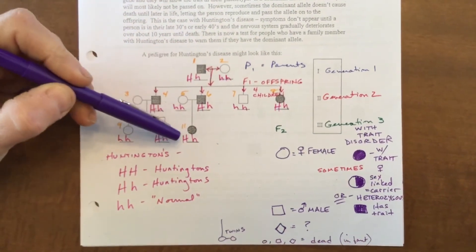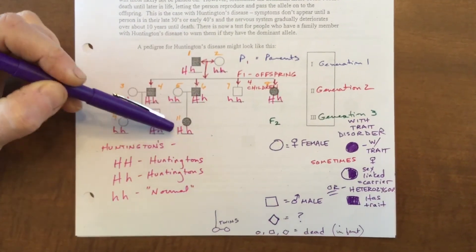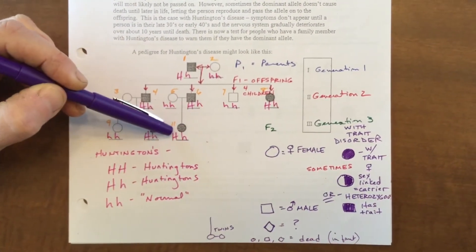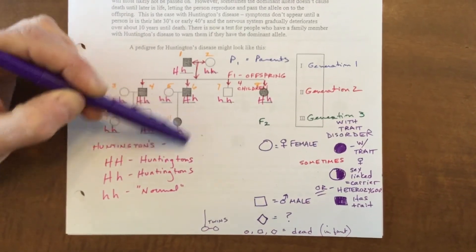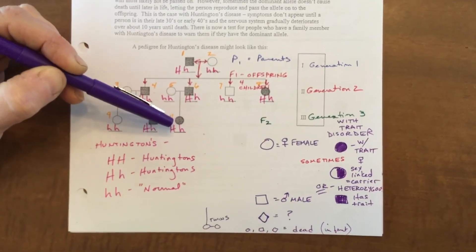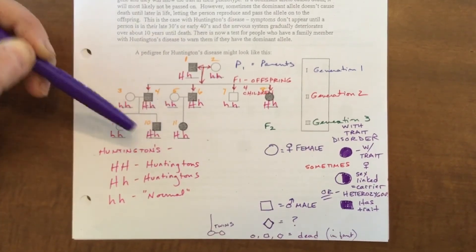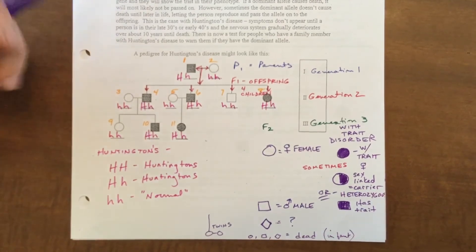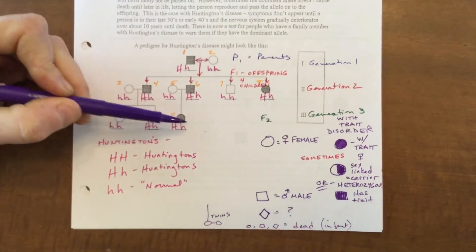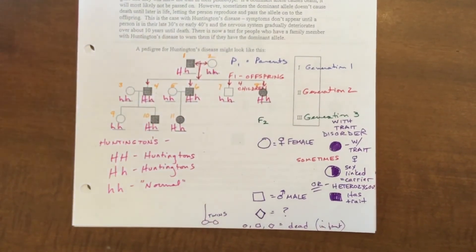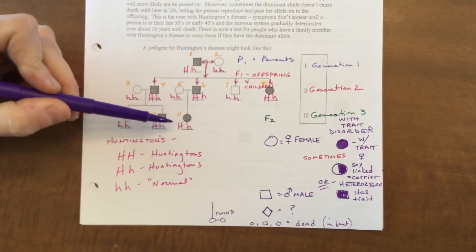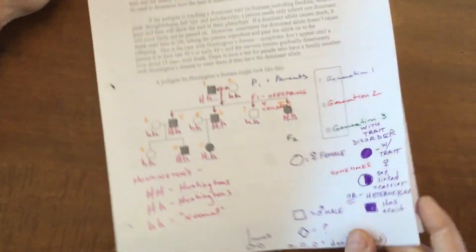As you work through the pedigree, there may come a point where you don't have enough information. If you're not sure whether an individual is big H big H or big H little h, you cannot just pick one — you have to show both possible genotypes. You can say this individual may be big H big H or big H little h. When they have children, maybe you'll be able to figure it out from there, but you can't guess without sufficient information.